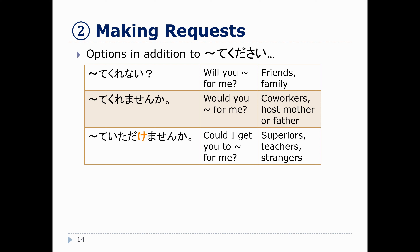For relationships that are a little bit more distant — like we are not close enough to use casual speech, but they're not my boss or anything — I might use te-form plus kuremasenka. So 'would you please do X for me?' I could use this with co-workers, or maybe if I went to Japan with my host family, like a classmate I don't really know but who is still roughly my age.